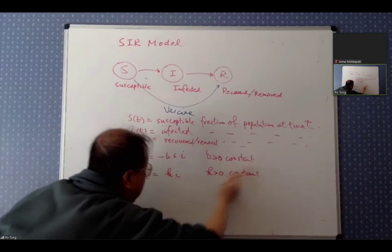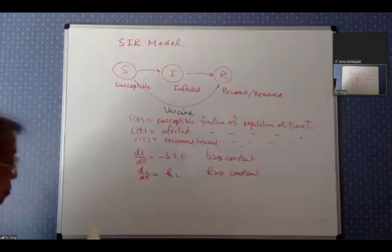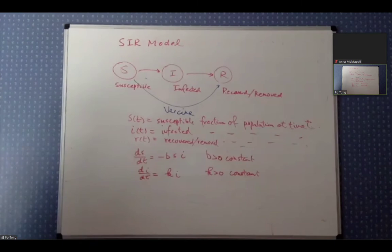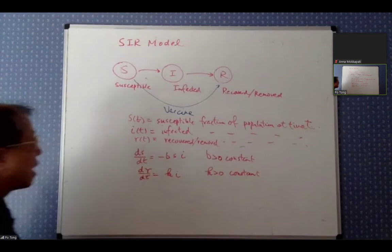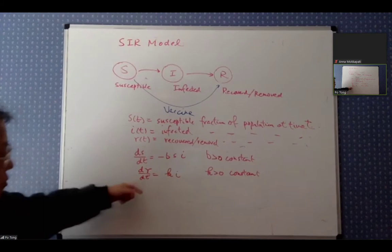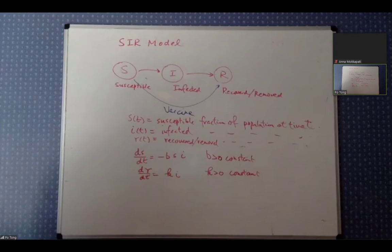The constant k measures how fast you recover. Big k means you recover faster, small k means you recover slowly. So dr/dt is the recovery equation — and that rate is k times i.